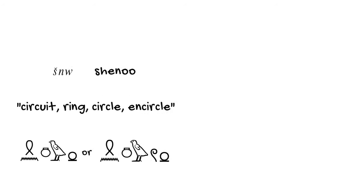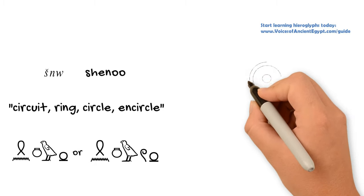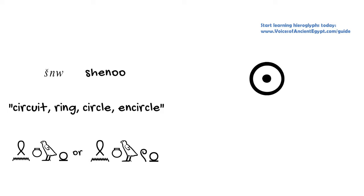And it references the sun's encircling or its circuit that it does every day. So in other words, basically encompassing the whole world.